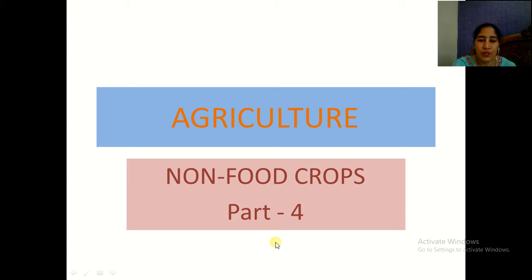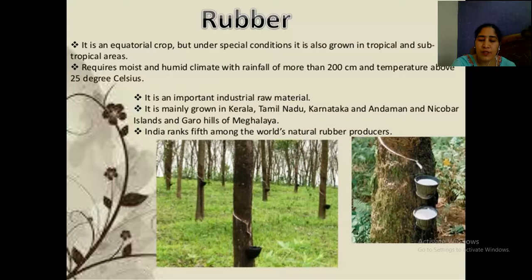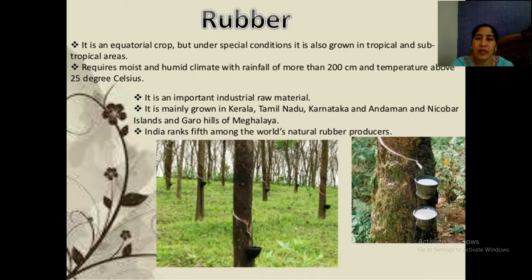Hello everyone. Today we will start the new topic: non-food crops. In the previous class we discussed some important food crops and crops other than food. The first crop is rubber. Rubber is an equatorial plant, meaning it can be grown in equatorial areas — the area near the equator.